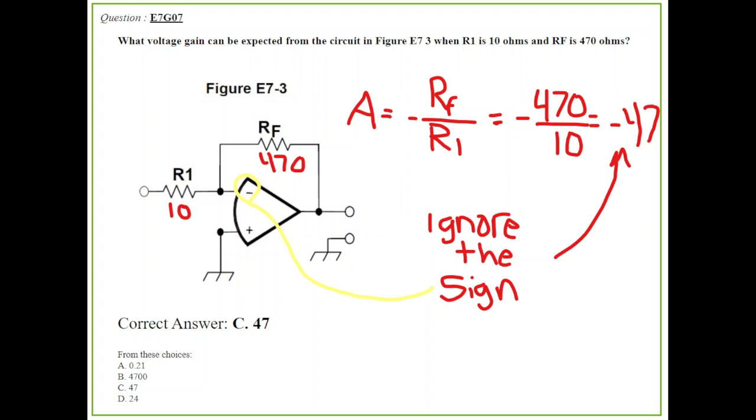You can ignore the sign here. The sign is only important if it asks you what is the output voltage. It's an inverting op amp topology. For now, it's 47. If you were to do this math wrong, you would come up with some weird number. If you do it right, you're going to have a 47. RF over R1.